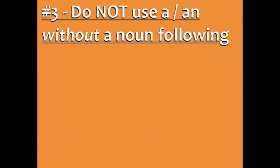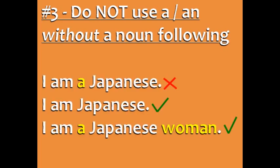Number three: do not use a or an without a noun following it. For example, you can't say 'I am a Japanese' because 'Japanese' is an adjective and there is no noun in the sentence.